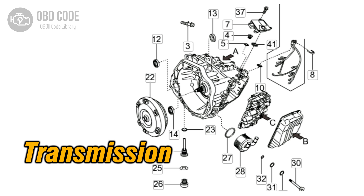The P0732 trouble code indicates that the transmission has detected an incorrect gear ratio in the second gear. This code is typically found in vehicles with automatic transmissions. The engine control module (ECM) or transmission control module (TCM) monitors the transmission's gear ratios to ensure they are within the expected parameters.